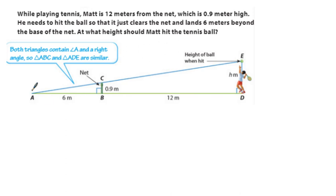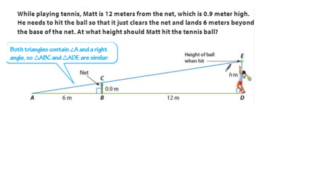Here are two triangles — the big one is triangle ADF and the little one is triangle ABC. While playing tennis, Matt is 12 meters from the net, which is 9 tenths meters high. He needs to hit the ball so it just clears the net and lands 6 meters beyond. We want to find at what height H meters Matt should hit the ball. First, we have to prove that the big triangle and the little one are similar. Both triangles contain angle A, so angle A is congruent to itself.